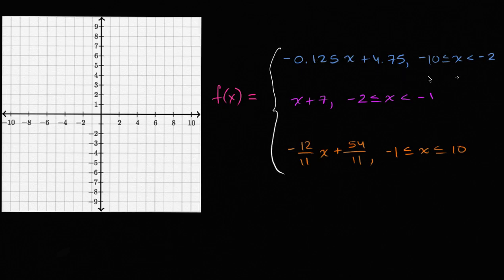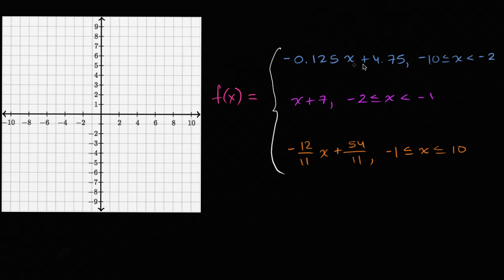I have this somewhat hairy function definition here, and I want to see if we can graph it. This is a piecewise function — it's defined as different lines. This interval for x, this line over this interval of x, and this line over this interval of x. I encourage you, especially if you have some graph paper, to see if you could graph this on your own first before I work through it.